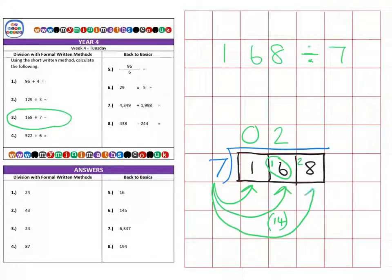Finally, how many sevens fit into 28? Well, we know four sevens equal 28 and there's nothing to carry over, nothing left over. So we have a final answer of 24.